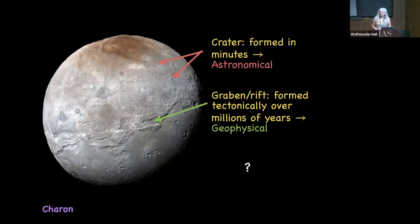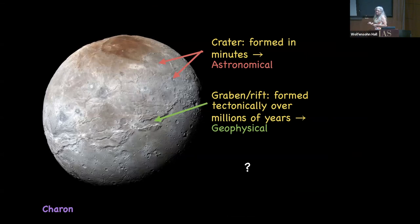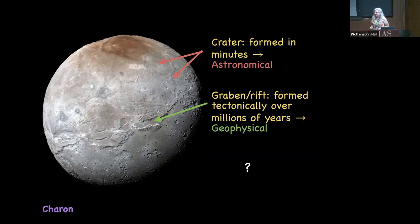We can turn that around. This is a New Horizons picture of Charon, and there are craters on this, like many bodies in the solar system. The assumption is the craters happen in minutes, but other surface features happen in millennia. So what if some of this could happen because of an astronomical event on a really short timescale?